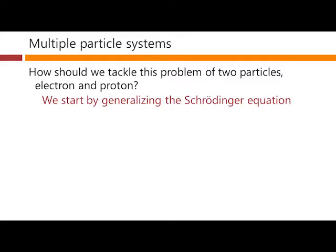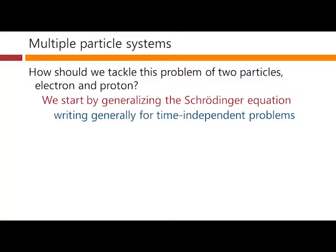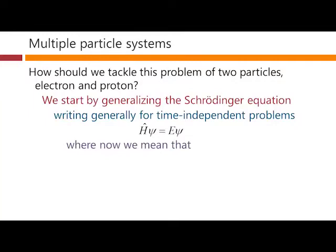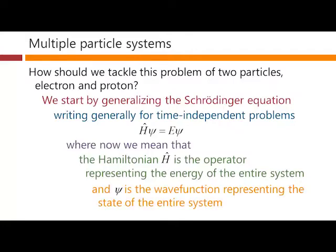What we do first of all is we start by generalizing the Schrödinger equation. Quite generally, for time-independent problems, the Hamiltonian operating on the wave function is equal to the energy times the wave function. Now this wave function could be the wave function of two particles or possibly more, and this Hamiltonian would be the energy operator for these two particles or possibly more. The Hamiltonian is the operator representing the energy of the entire system, and psi is the wave function representing the state of the entire system, no matter how many particles it has in it.